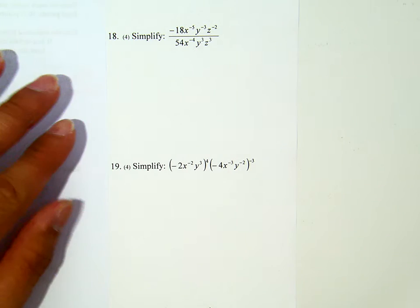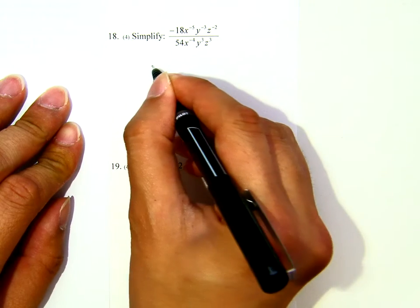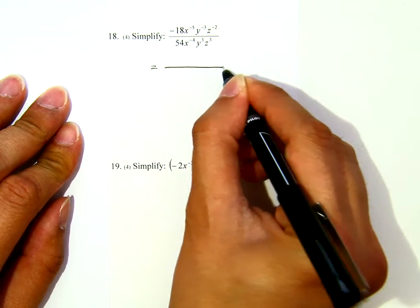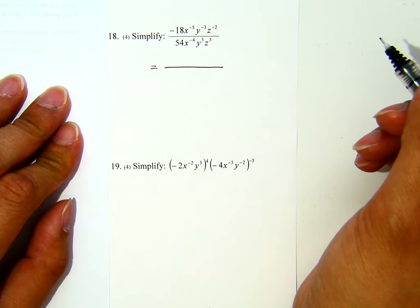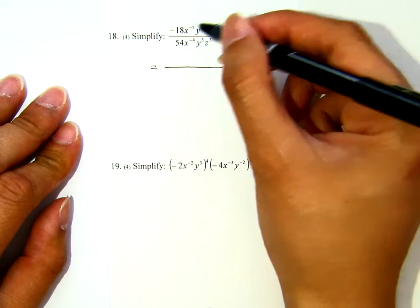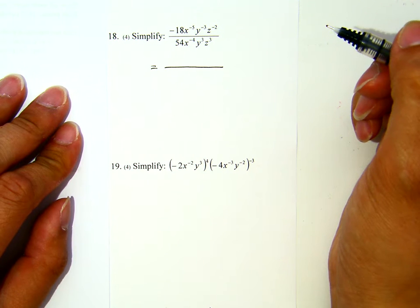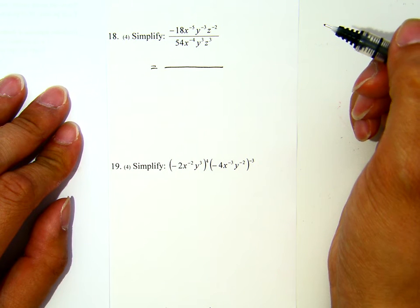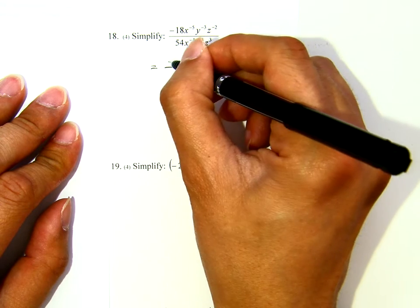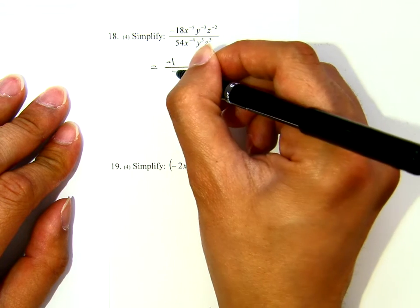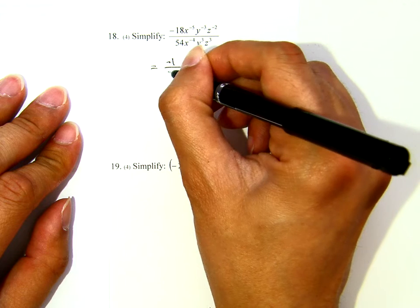Let's see number 18. What I will do here, I will simplify first the coefficients, 18 and 54. I think both are multiples of 18, 54 is 18 times 3. So I can put maybe negative 1 on the top and 3 at the bottom.